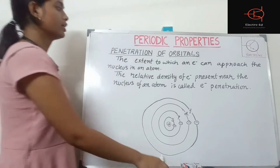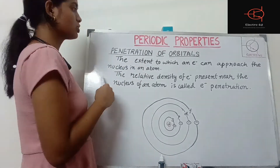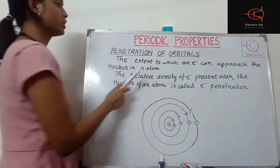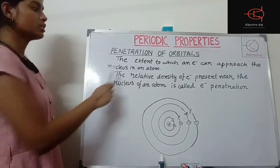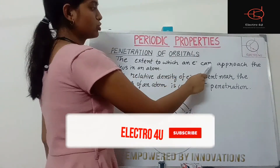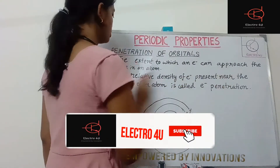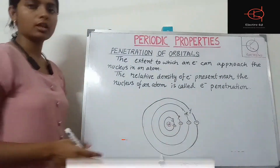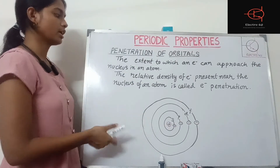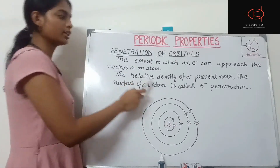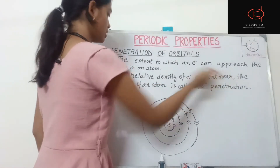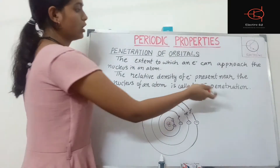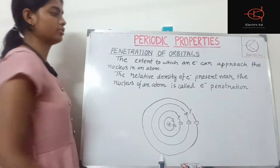So here we can see the definition for penetration. What is penetration? The extent to which an electron can approach the nucleus in an atom is called penetration. The relative density of electrons present near the nucleus of an atom is called electron penetration.